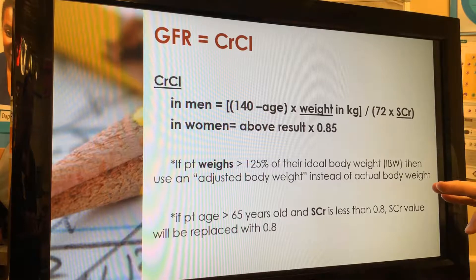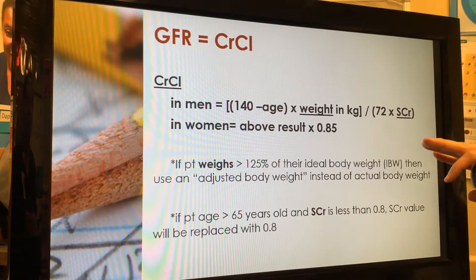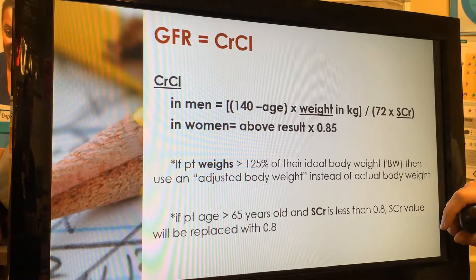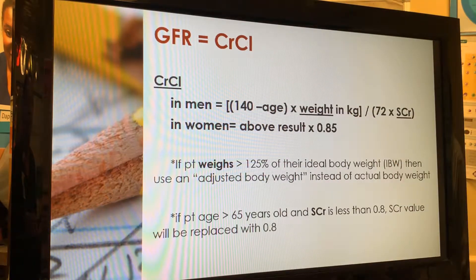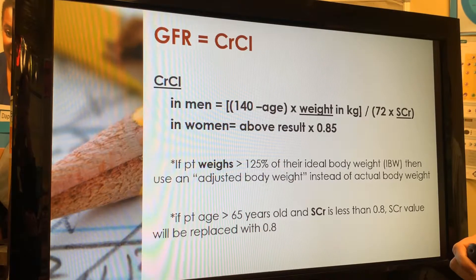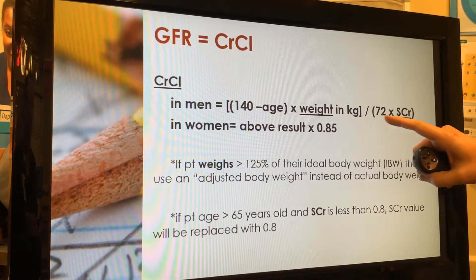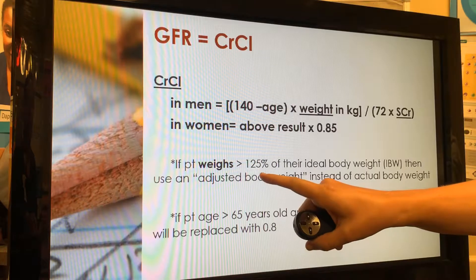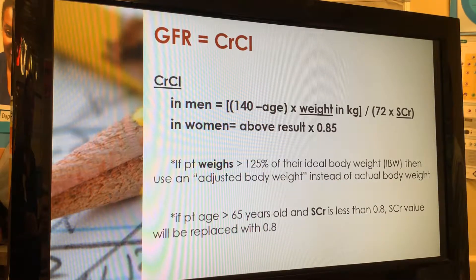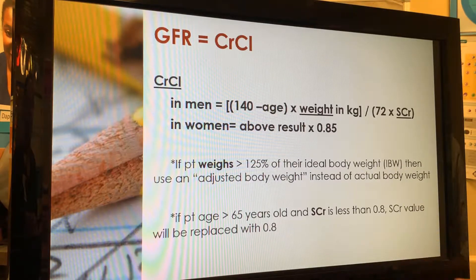To restate: dose equals AUC times GFR plus 25. What most people get hung up on is the GFR. On the Banner campus we use the modified Cockcroft-Gault, which is the same standard Cockcroft-Gault equation with two exceptions: if a patient is over 125 percent of their ideal body weight, we use an adjusted body weight; and if the patient is over 65 and their serum creatinine is less than 0.8, we automatically adjust the creatinine up to 0.8.